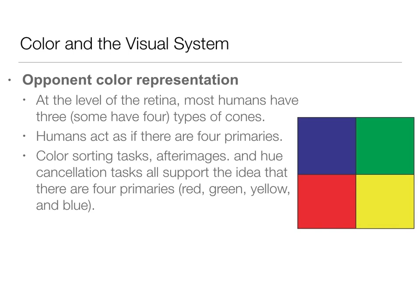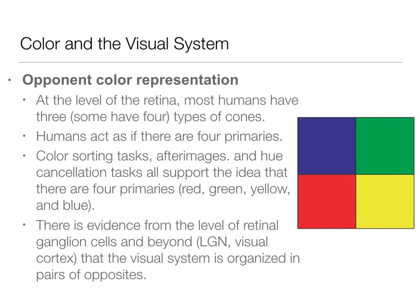We also have evidence from retinal ganglion cells and beyond that color perception is organized this way. We're not going to go into a lot of detail about that retinal level in this class, but there's lots of support — both physiological and behavioral. So let's go through some of the behavioral support for this opponent color representation theory.